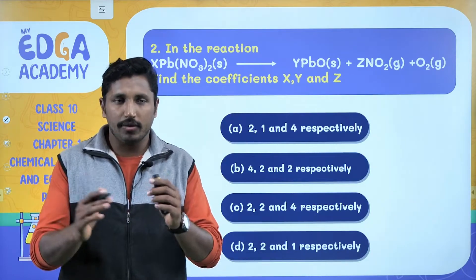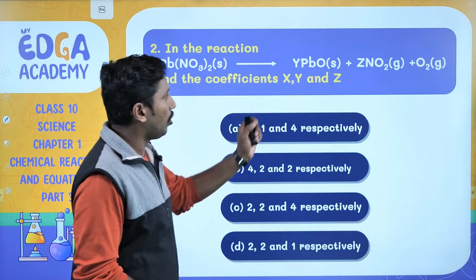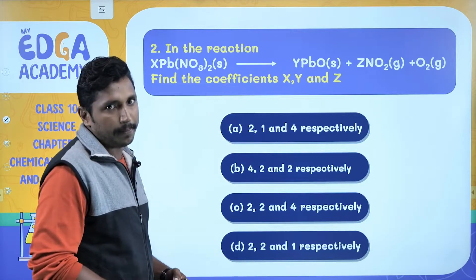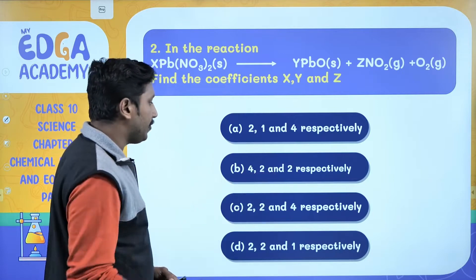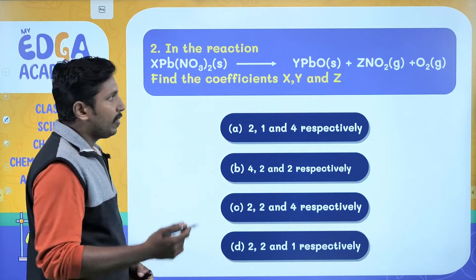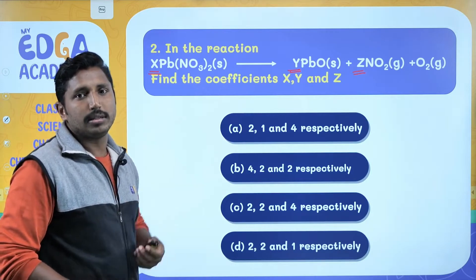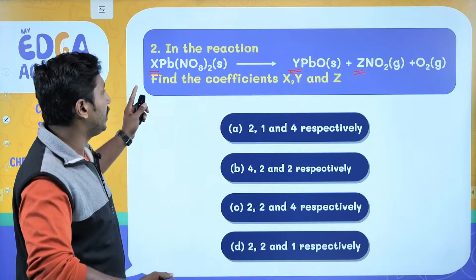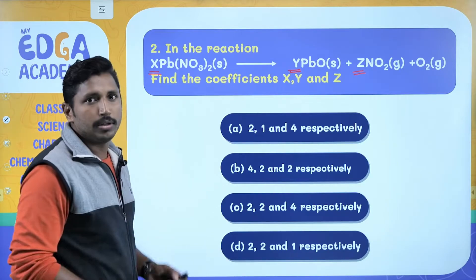Now let's go on to the second question. In the reaction: X Pb(NO3)2 solid gives Y PbO solid plus Z NO2 gas plus O2 gas. Find the coefficients X, Y, and Z. We have four different options: 2, 1, and 4 respectively; 4, 2, and 2 respectively; 2, 2, and 4 respectively. We need to balance the chemical equation by multiplying each reactant or product with the appropriate coefficients X, Y, and Z. We are going to use the option elimination technique.